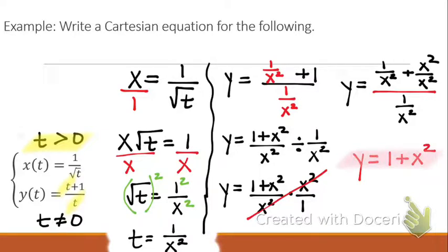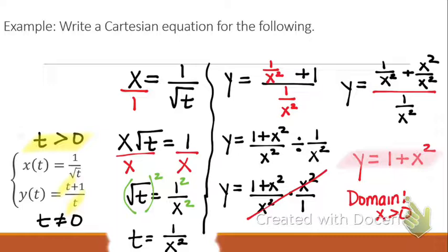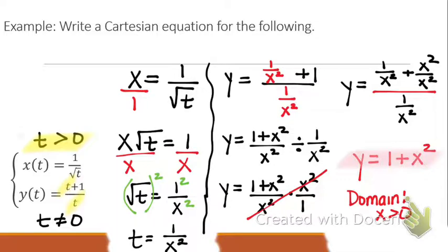So this is my equation: y equals 1 plus x squared. The equation itself doesn't have any red lights. But because of the original x and y equations, I inherited the domain. So my domain is x is greater than 0, which is written as parenthesis 0 to infinity. We don't have any brackets in our domain. And that is it.